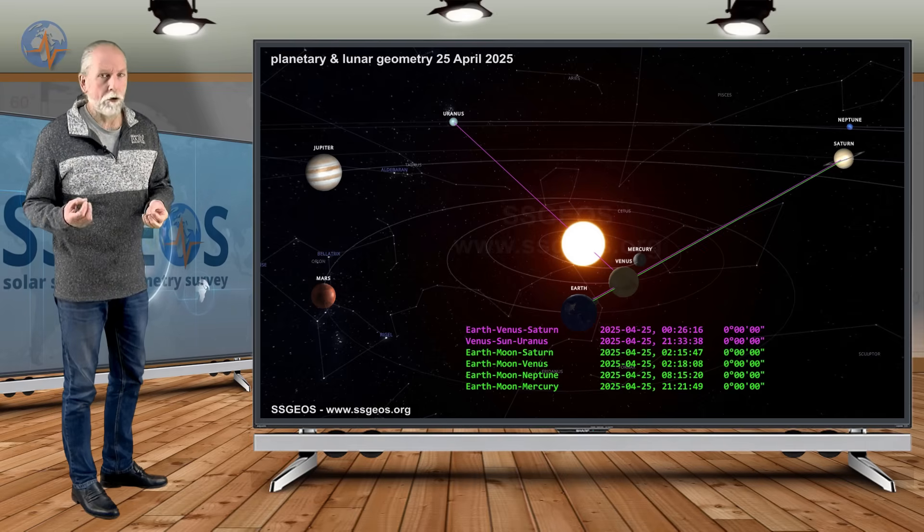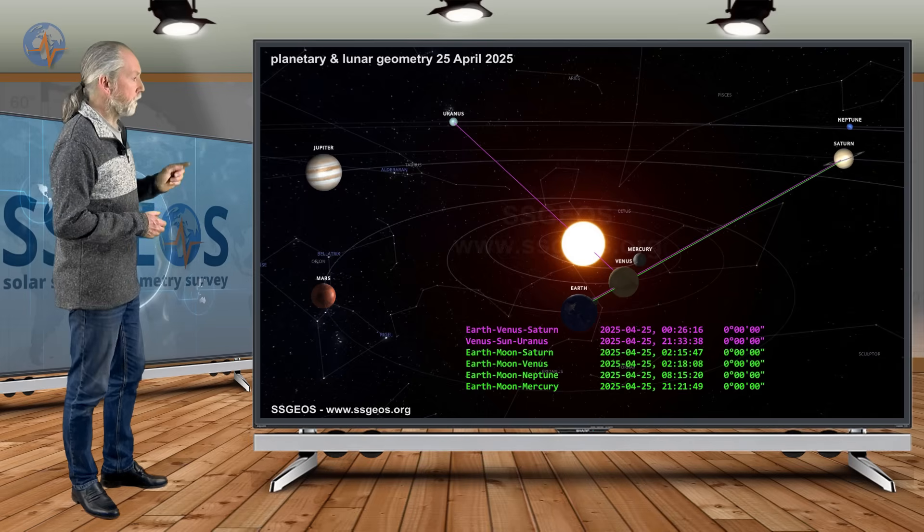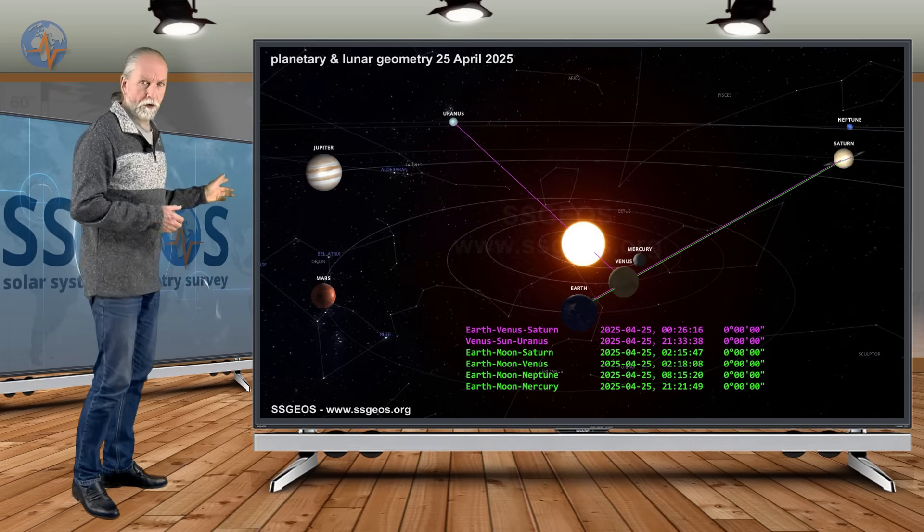There is an absence of Mercury. Mercury is not in there. That is a positive sign. But Venus, Sun, and Uranus, that is a critical factor.